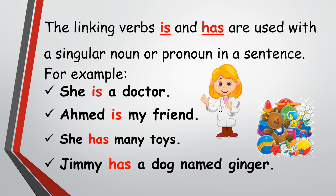The linking verbs 'is' and 'has' are used with a singular noun or pronoun in a sentence. For example: 'She is a doctor,' 'Ahmad is my friend,' 'She has many toys,' 'Jimmy has a dog named Ginger.' In these examples, she, Ahmad, she, and Jimmy are the subjects, and a doctor, my friend, many toys, and a dog named Ginger are the information about the subjects.